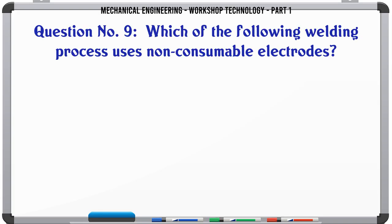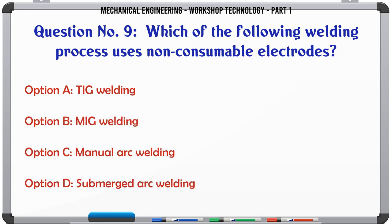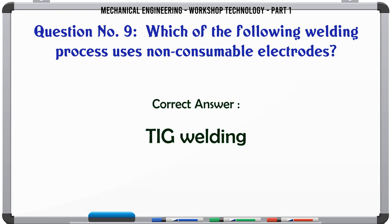Which of the following welding processes uses non-consumable electrodes? A. TIG welding. B. MIG welding. C. Manual arc welding. D. Submerged arc welding. The correct answer is: TIG welding.